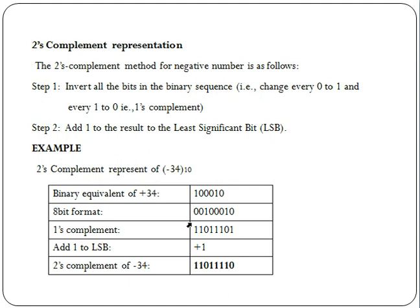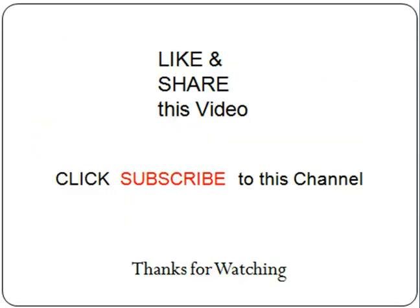For Two's Complement representation, you first convert all the bits — obtaining the one's complement — then add one to the result. The result is to add one bit to the rightmost position. For example, this is the one's complement value, and this is the two's complement of minus 34.